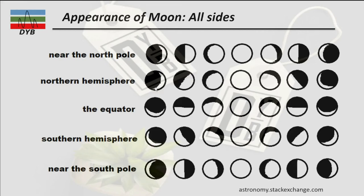Let's look at the appearance of the moon from all hemispheres — north pole, south pole, and equator. From the north pole the moon appears like this through its phases: first quarter, full moon, second quarter. From the northern hemisphere it appears similarly but more tilted. At the equator the moon appears in this orientation when new and ends the same way. From the southern hemisphere the moon appears flipped — the other way around — through the full moon and to end of month.